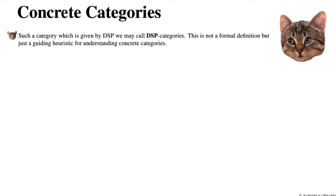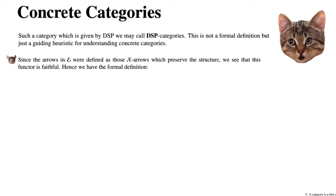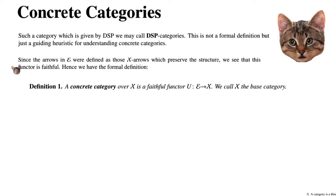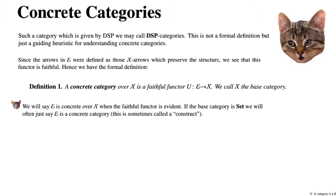Such a category, given by data-structure-properties, we may call a DSP category. This is not a formal definition, but just a guiding heuristic for understanding how concrete categories arise. Since arrows in E were defined as those X-arrows which preserve the structure, we see that the forgetful functor defined by this DSP is always faithful. So we take that as our formal definition: a concrete category over X is a faithful functor U: E → X. We call X the base category, and say E is concrete over X when the faithful functor is evident.